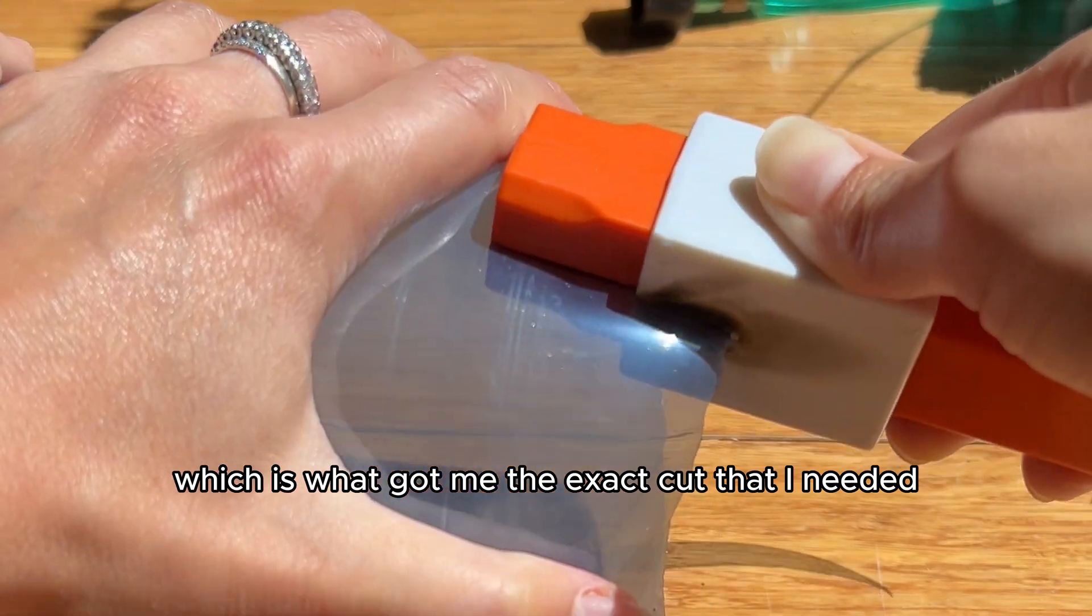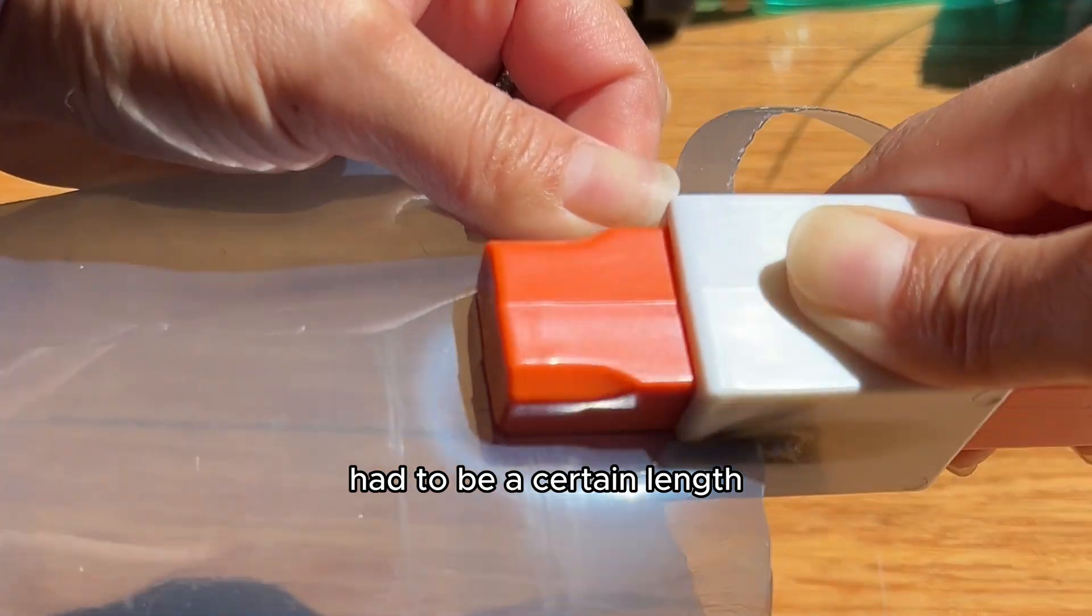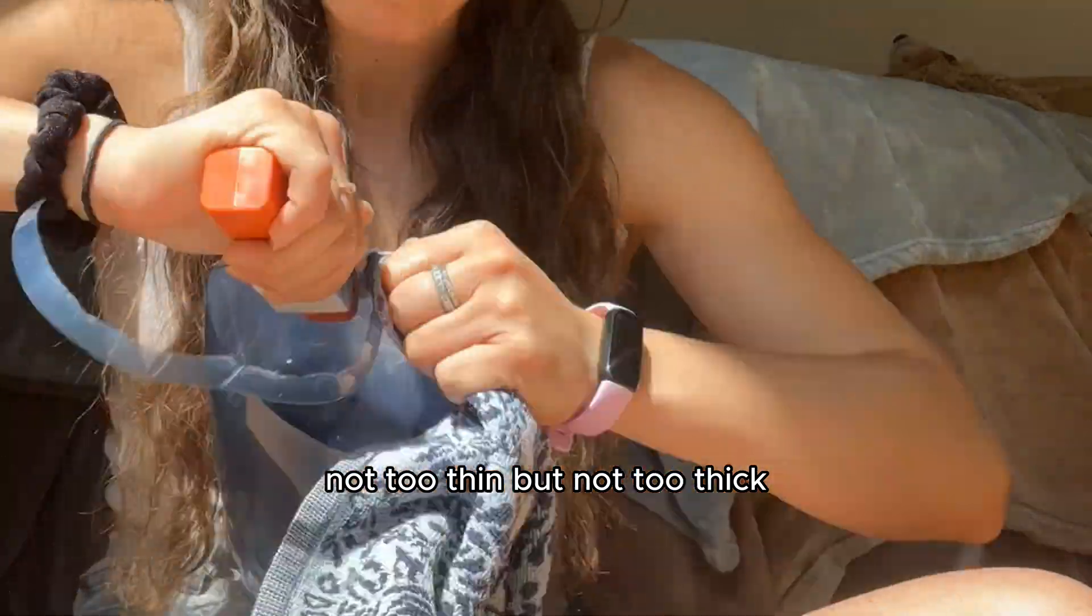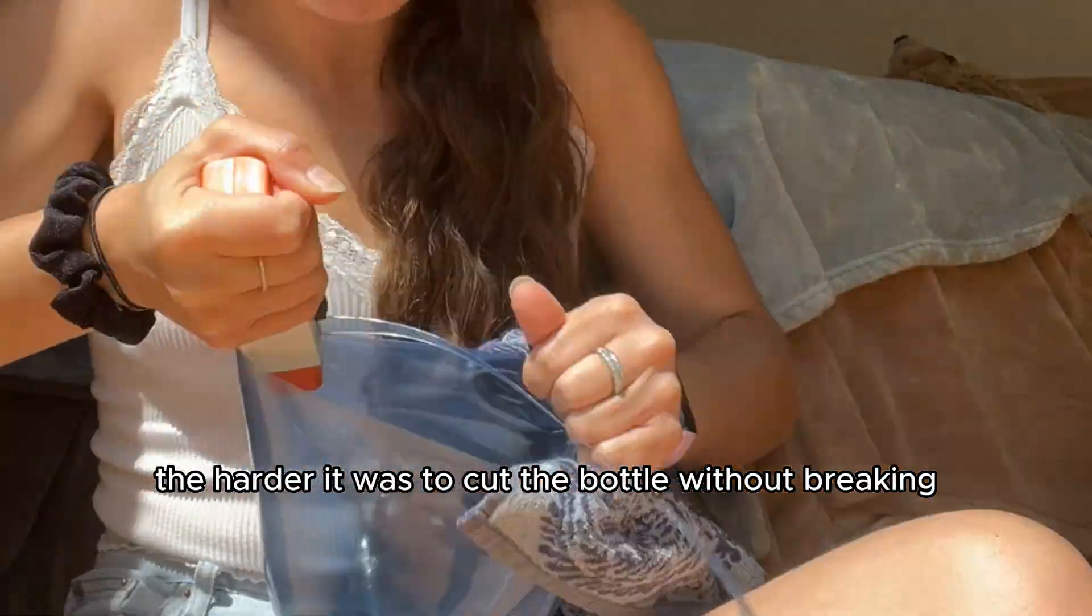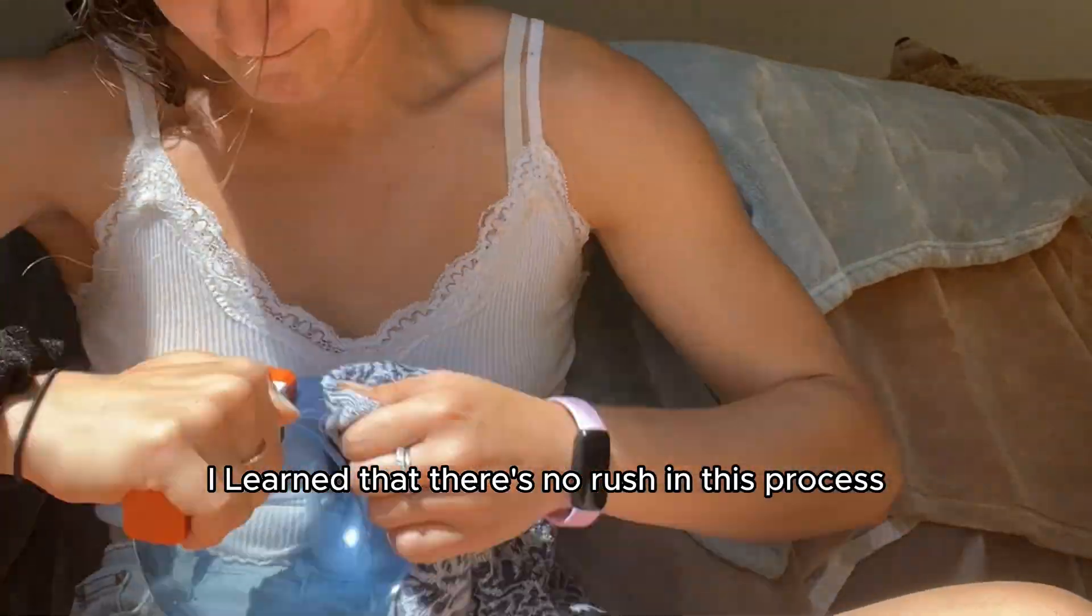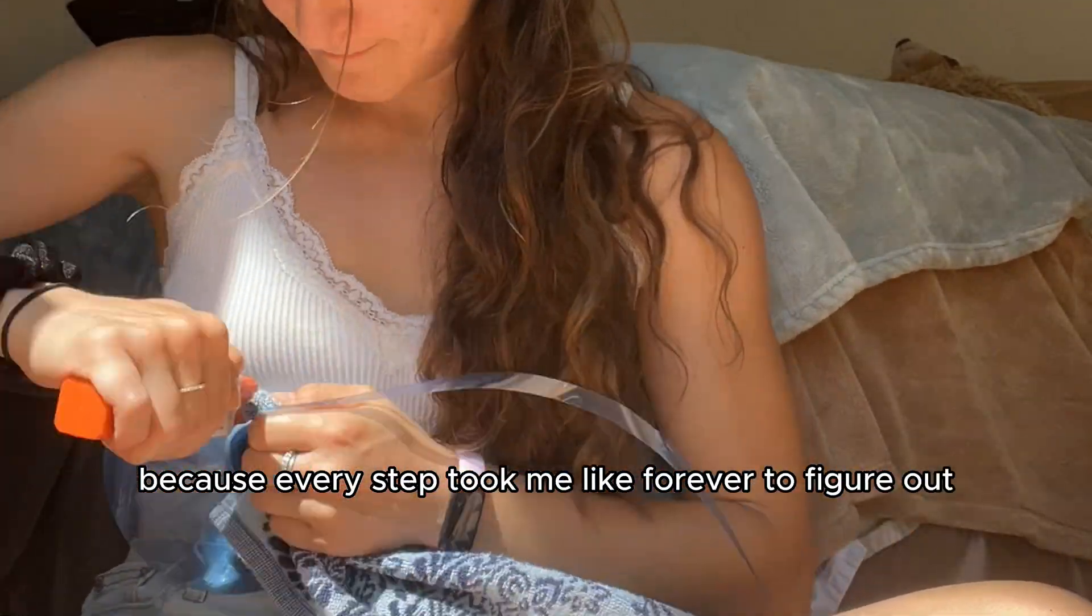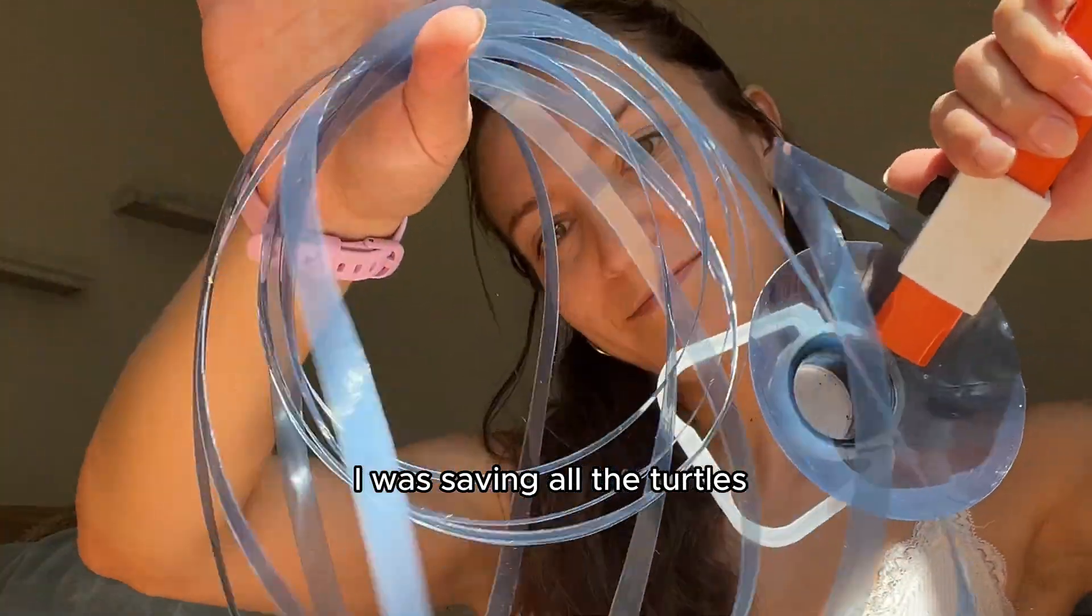I also learned that the diameter of the strips had to be a certain length, not too thin but not too thick. But the thinner the diameter the harder it was to cut the bottle without breaking the strips. I learned that there's no rush in this process because every step took me like forever to figure out, but of course it was worth it because I was saving all the turtles.